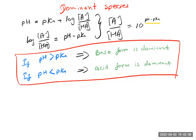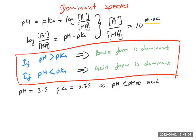For example, in the homework we had a question where the pH was 3.5 and you were given the Ka, from which we calculate the pKa — it came out to about 3.75. Since the pH of 3.5 is less than the pKa of 3.75, the acid form is dominant.